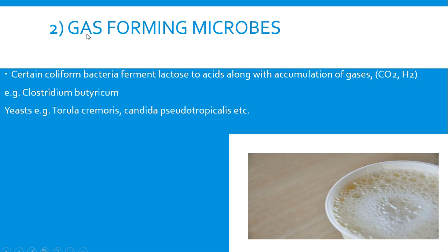The second type is the gas-forming microbes. There are certain coliform bacteria, like Clostridium butyricum, which ferment lactose to acids accompanied by an accumulation of some gases. The gas is a mixture of carbon dioxide and hydrogen. Clostridium butyricum produces a large amount of carbon dioxide, whereas coliform bacteria are also involved in gas formation and they will produce mostly hydrogen gas.